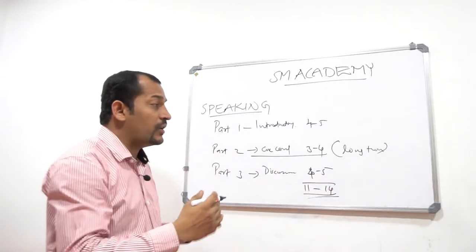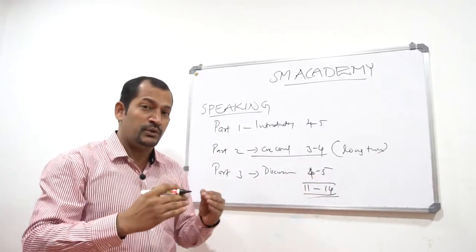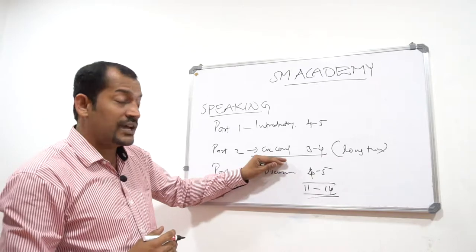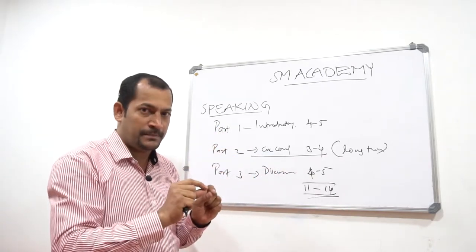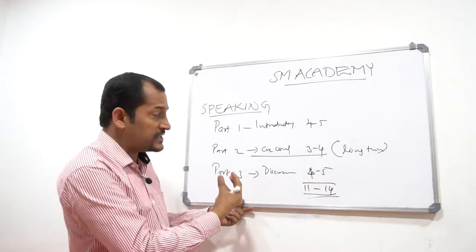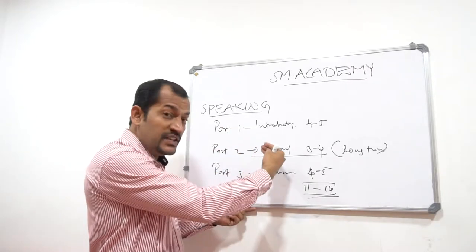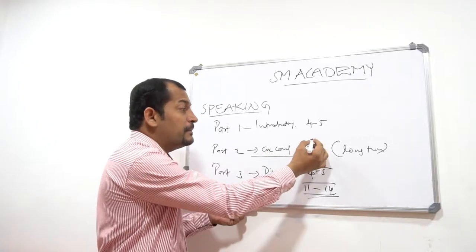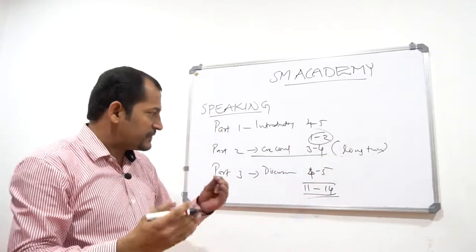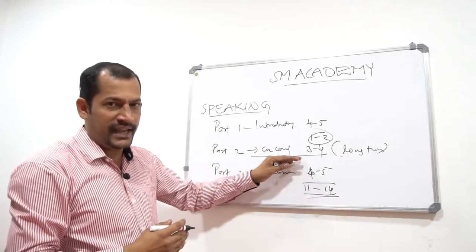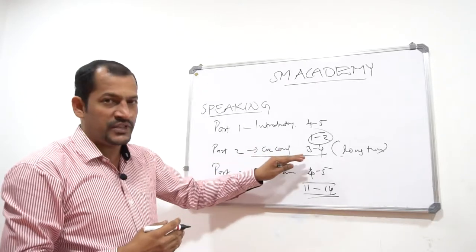The reason it's called a long turn is that you are speaking from your end. This is the cue card round. You get a white paper with a particular question written on it and three subsidiary points. You need to develop these points and speak about it for a minimum of 1 minute and a maximum of 2 minutes. That's what usually happens in the cue card round, the Part 2 of the speaking session.